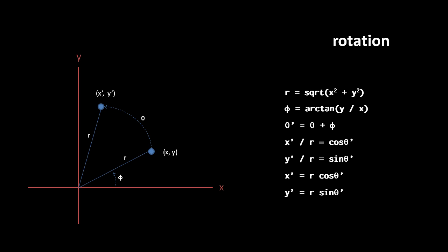Now we have a formula for rotation. Note that our formula holds up when the starting point is in another quadrant. Here the starting point is in the fourth quadrant, but even if phi is negative, adding phi to theta still yields the correct angle for the line of x prime, y prime, so the formula works out the same.